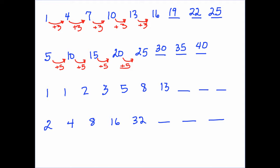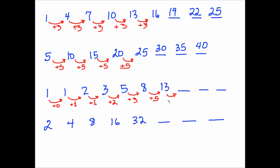The third sequence is a little bit different. Going from the first two terms, you add 0, then you add 1, then 1 again, then 2, then 3, then 5. The differences — 1, 1, 2, 3, 5 — are not all the same, but they follow a pattern. It looks like if we continue this sequence, the next addition would be 8, then 13.